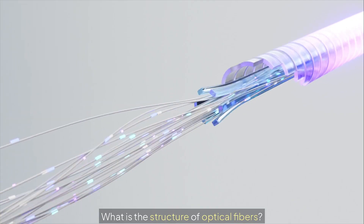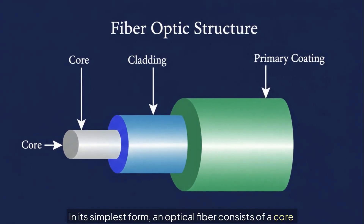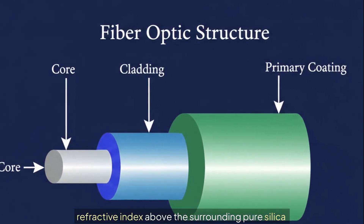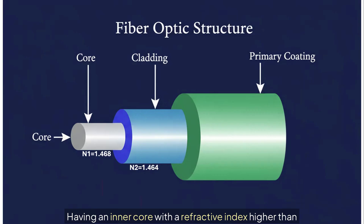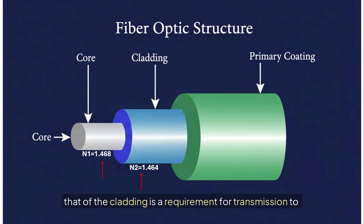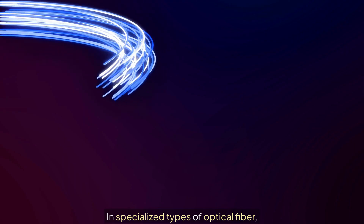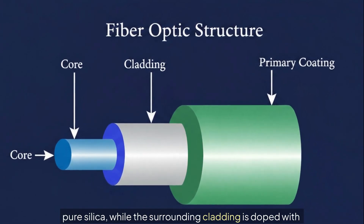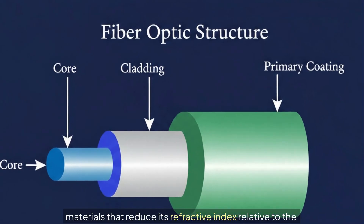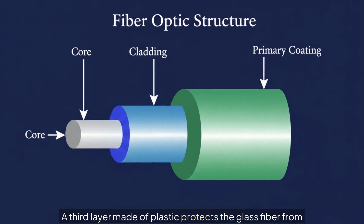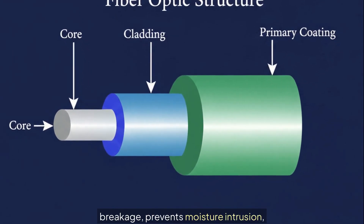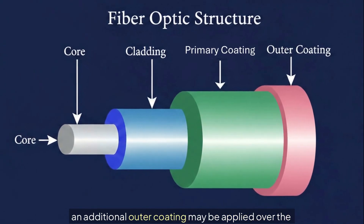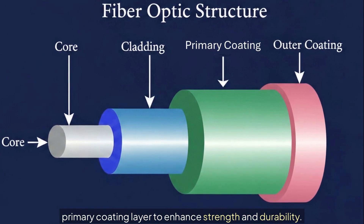In its simplest form, an optical fiber consists of a core of silica, typically doped with germanium to elevate its refractive index above the surrounding pure silica cladding. Having an inner core with a refractive index higher than that of the cladding is a requirement for transmission to happen. In specialized types such as pure silica core fiber, the cladding is doped with materials that reduce its refractive index relative to the core. A third layer made of plastic protects the glass fiber from breakage, prevents moisture intrusion, and adds flexibility. In certain applications such as enterprise networks, an additional outer coating may be applied to enhance strength and durability.